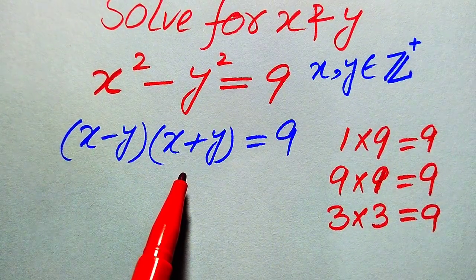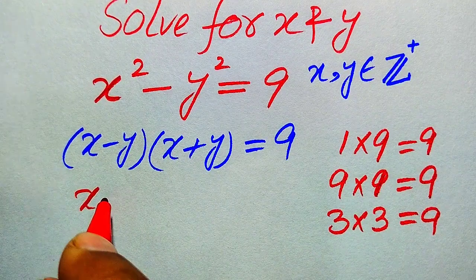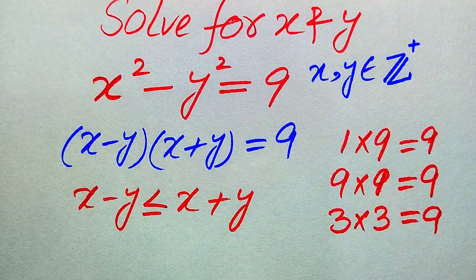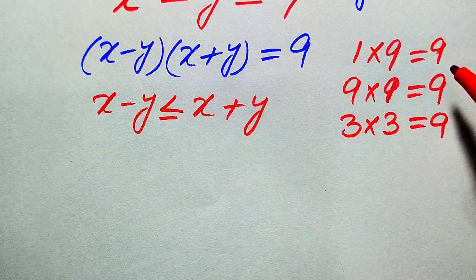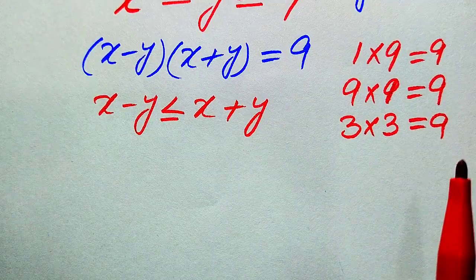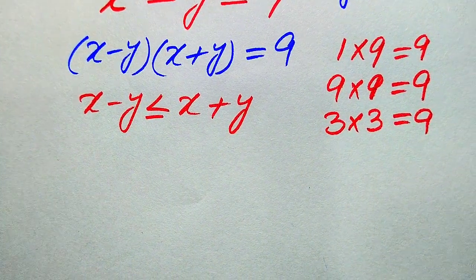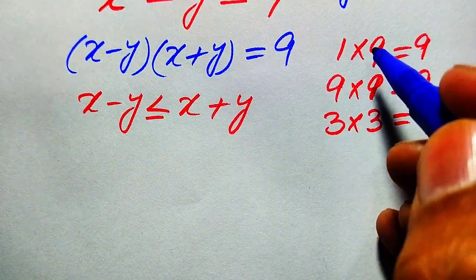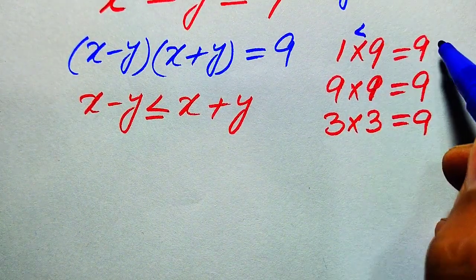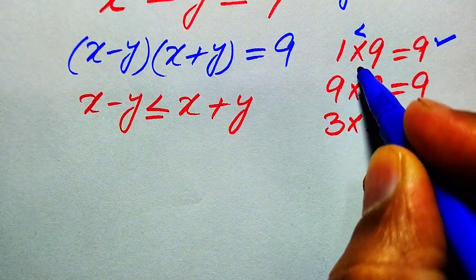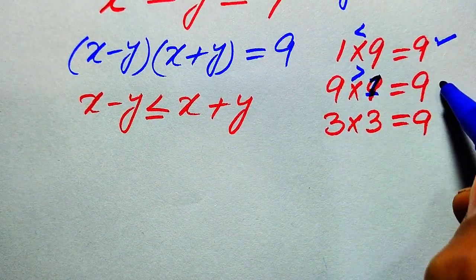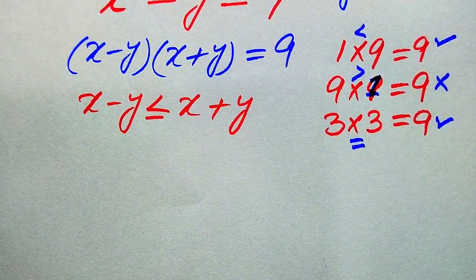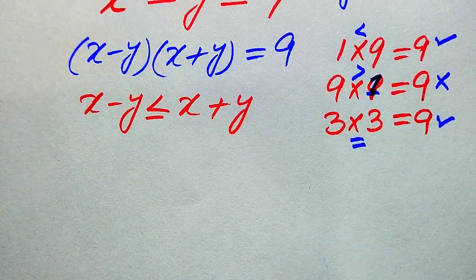We know that x minus y is always less than or equal to x plus y, so we choose possibilities according to this relation. Our first factor is always less than or equal to the second factor. Since 1 is less than 9 we accept that pair; since 9 is greater than 1 we reject that pair; and since 3 equals 3 we accept that pair.